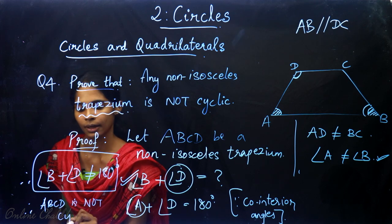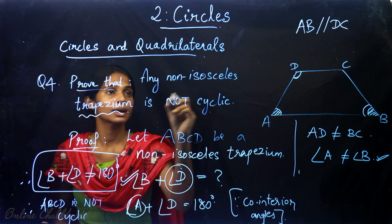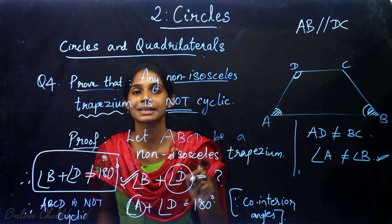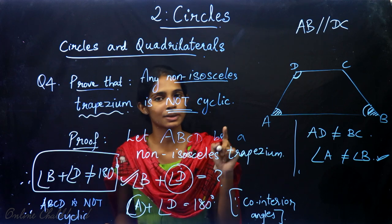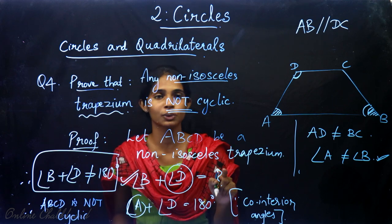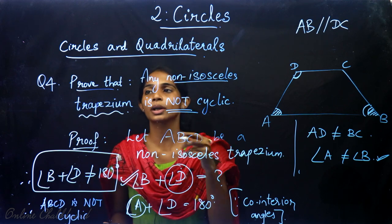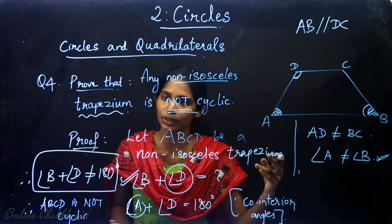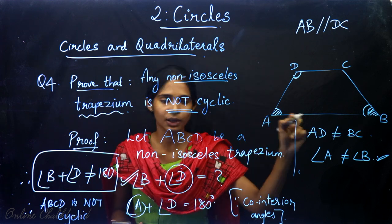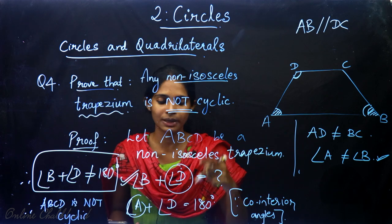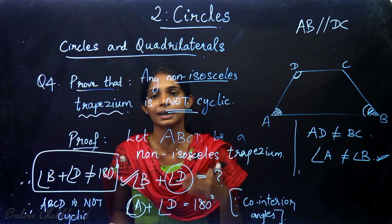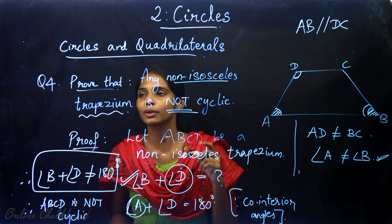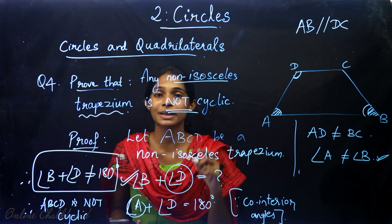So we can say that quadrilateral ABCD is not cyclic. Thus, we showed that a non-isosceles trapezium will not be cyclic. I hope this question is clear for all of you. We proved it step by step. Now we move to question number 5.